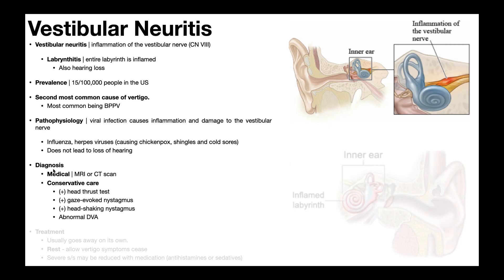The gold standard for diagnosing vestibular neuritis is an MRI or a CT scan. With inflammation of the vestibular nerve, there's going to be local fluid accumulation in that area, which will show up on imaging like an MRI. They'll compare the left and right sides and see fluid accumulation by one vestibular nerve, confirming vestibular neuritis — particularly when found in conjunction with symptoms like dizziness and vertigo.